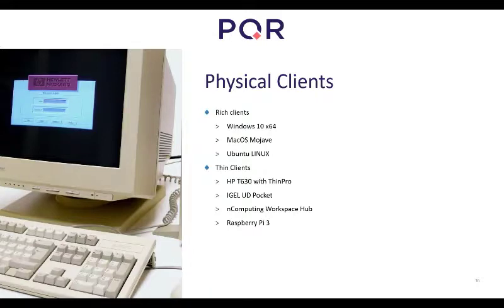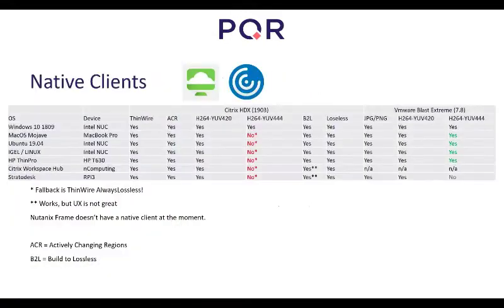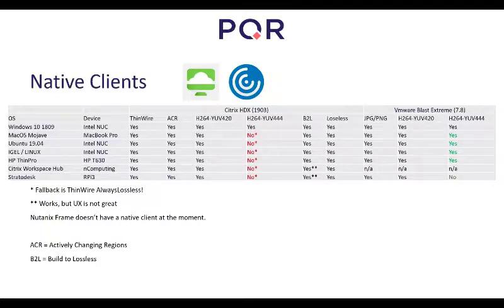We tested several physical clients: rich clients including Windows 10, macOS, and Ubuntu, and thin clients including the HP t630 with ThinPro, an IGEL UD Pocket, an NComputing Workspace Hub (the Citrix Workspace Hub), and a Raspberry Pi 3 with a custom image. We created a spreadsheet testing all combinations. The finding: for 2D CAD with Citrix, only Windows endpoints support YUV 444.